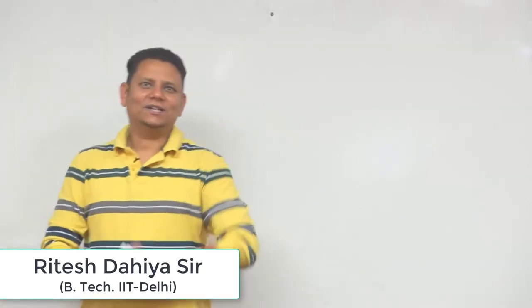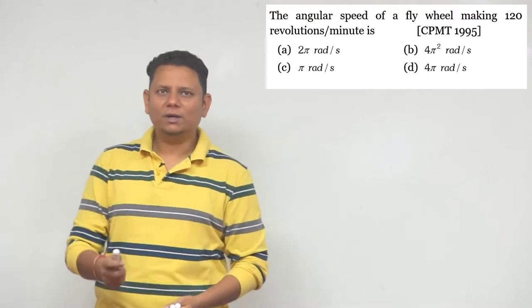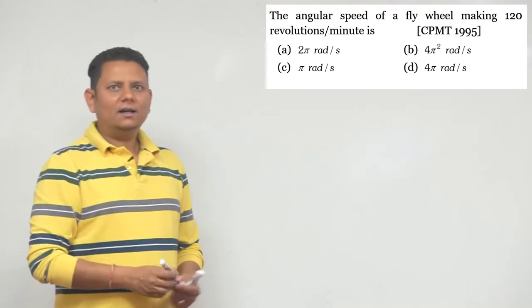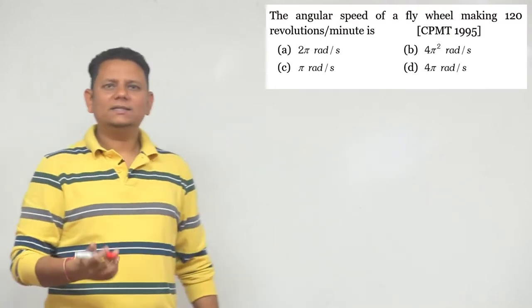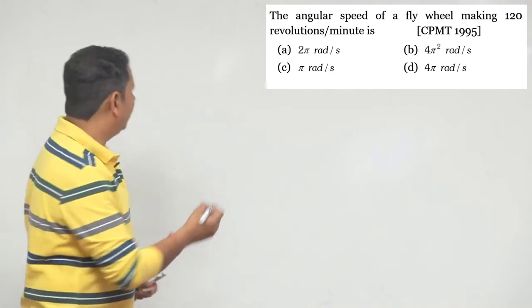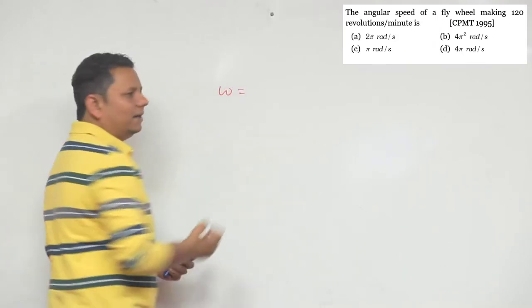Alright, next question: the angular speed of a flywheel making 120 revolutions per minute is... this is the question from CPMT 1995. So we have to find what will be the angular speed omega. Now omega, as you know here...